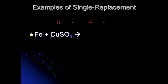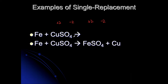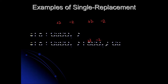Another example: iron and copper sulfate. Again, iron will take the place of copper. In this instance, iron is also a plus two. Since iron is a plus two and sulfate is a minus two, there will be no subscripts needed here.